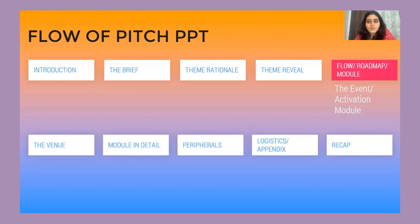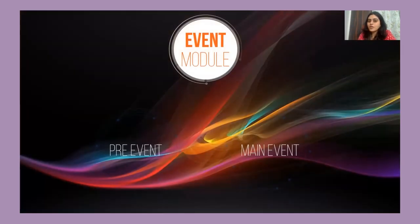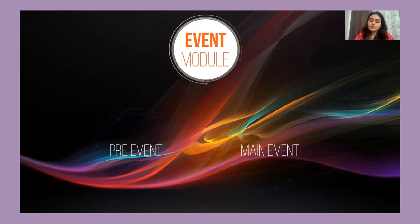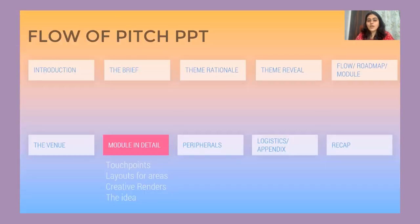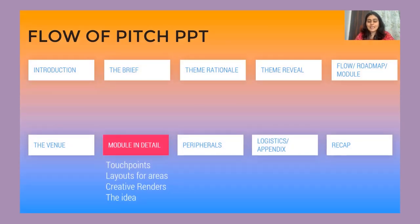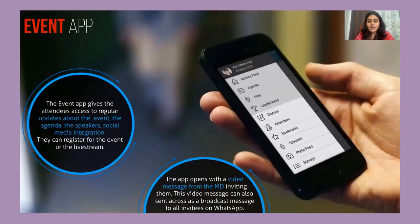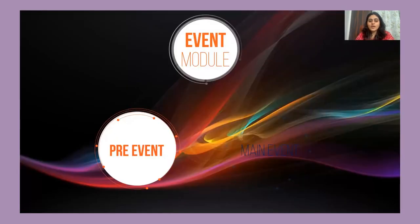Next is the event or activation module — basically the approach you've decided on. Are you doing a touchpoints-based module, a TG-based module, or another structure? In this particular example, it was simply pre-event and main event. It could have been pre-event, main event, post-event, or day one, day two, day three, or employees and dealers — whichever approach you've chosen.